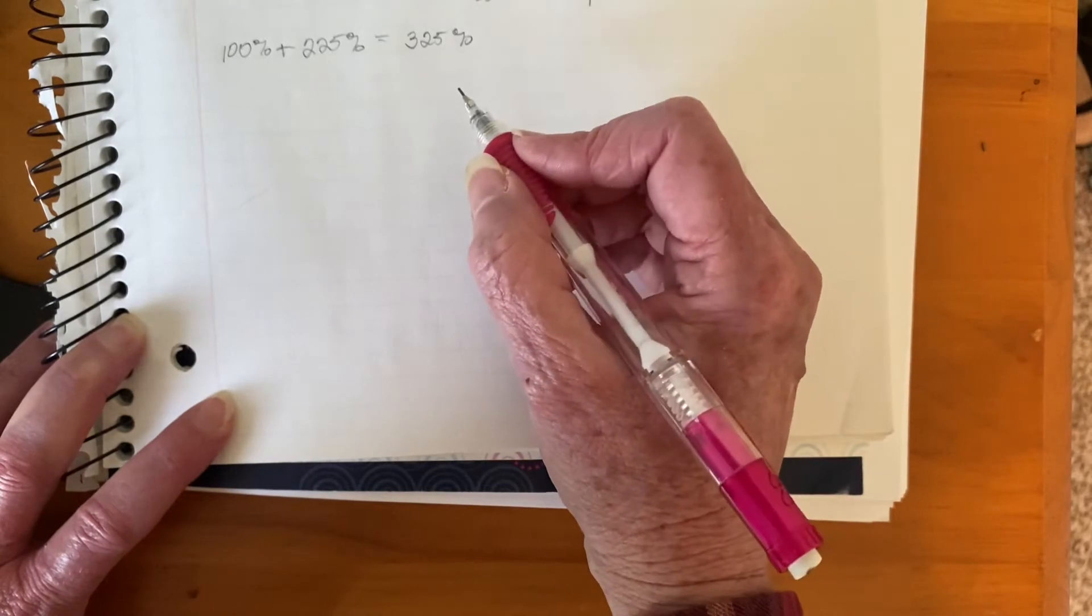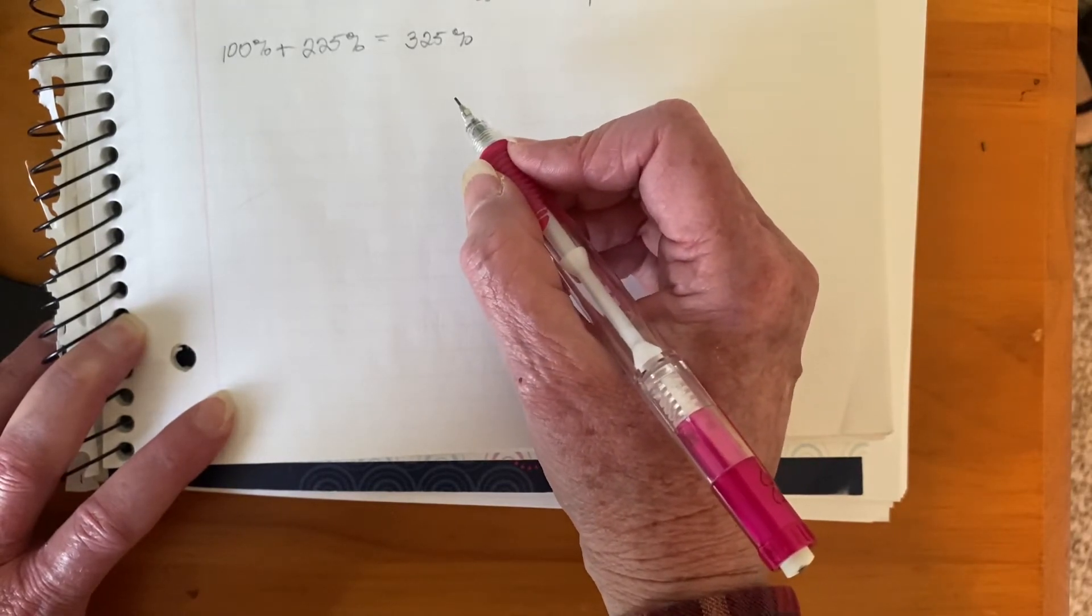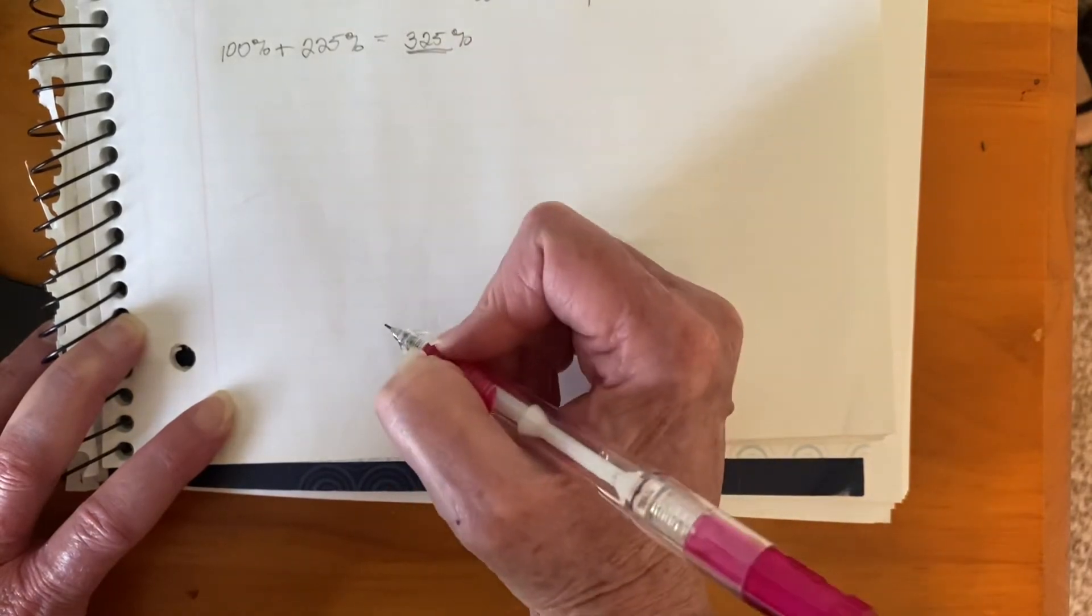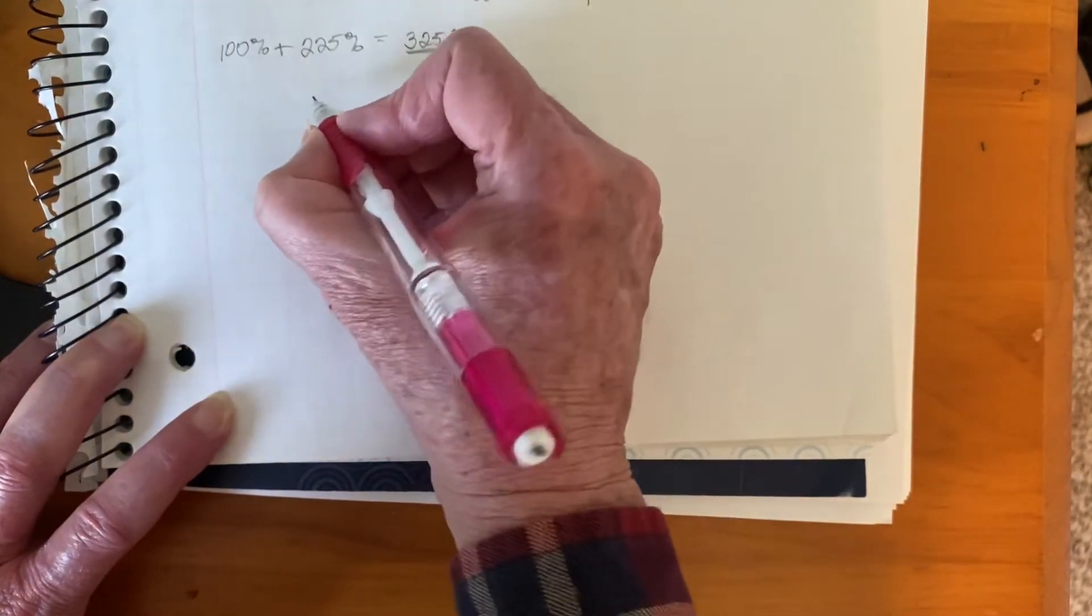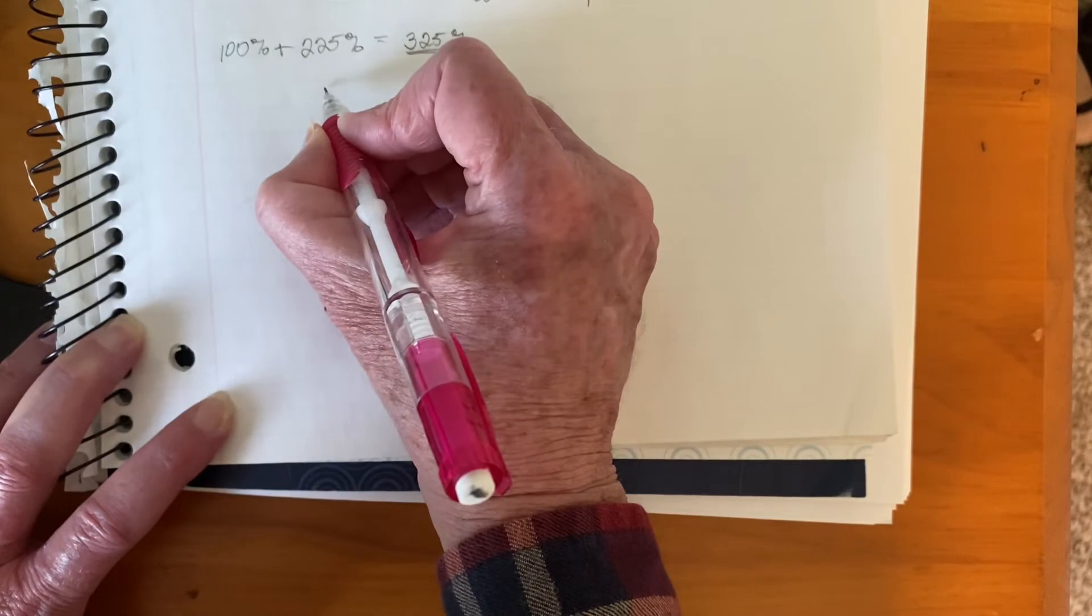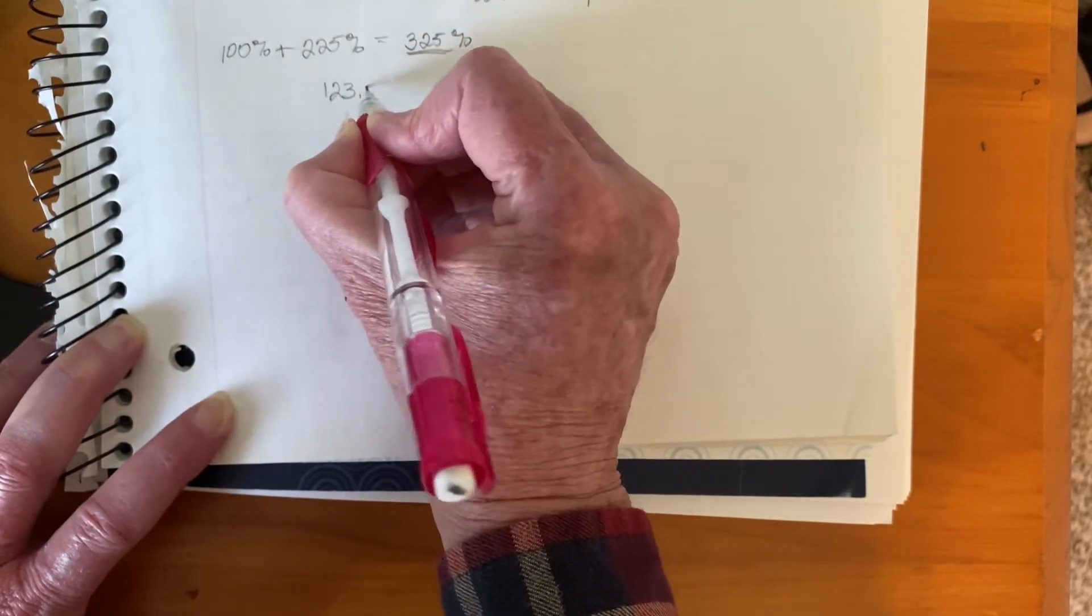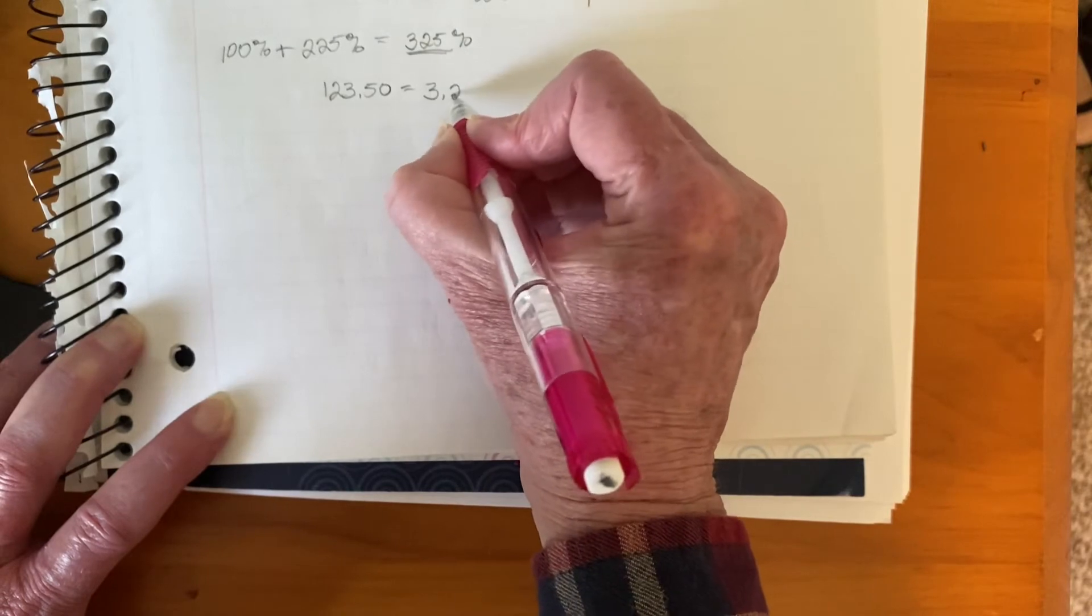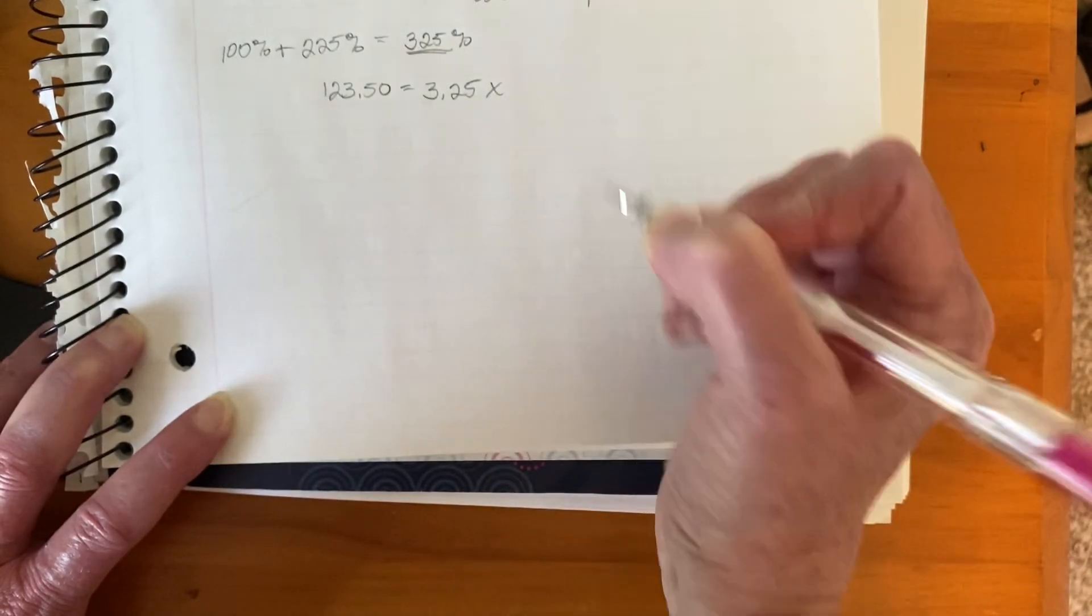So that's the percentage you're going to use when you create your equation, where the new equals the percentage times the original. So the new we know is $123.50, which is 325% of the original. We don't know the original.